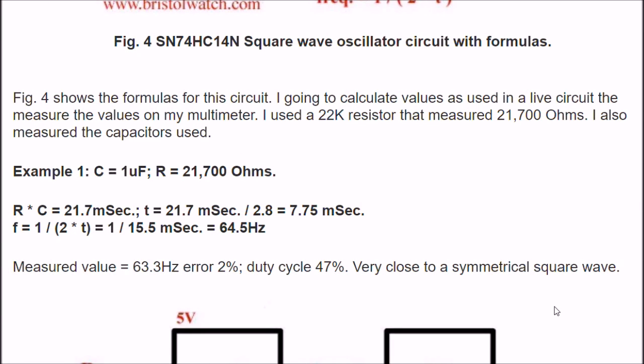And so, once again, C times R, whatever that turns out to be, divide by 2.8. Multiply that value by 2, take a reciprocal or divide it into 1, and you get the frequency. Okay, example problem one. My capacitance is 1 microfarad. My resistance is 21,700 ohms. Why was that? Because I used it originally with a single 22K resistor that actually measured 21,700 ohms on a multimeter. Alright, R times C is going to come out. Remember, convert C to farads, and that's .00001 times 21,700. Gives you 21.7 milliseconds.